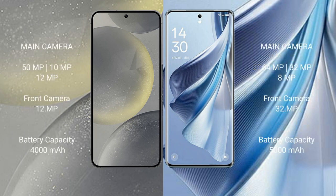Samsung Galaxy S24 features a triple rear camera setup: 50MP plus 10MP plus 12MP, with a 12MP front camera. Oppo Reno 10 also features a triple rear camera setup: 64MP plus 32MP plus 8MP, with a 32MP front camera.